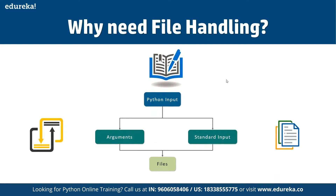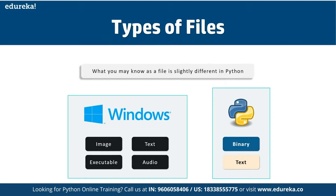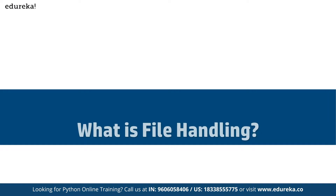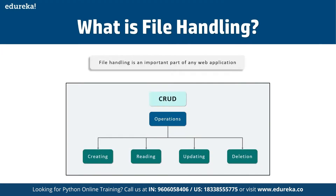There are multiple types of files available. In Windows, we have files in the format of images, text, executables, audio clips, documents, PDFs, and more. In Python, we have either binary or text datasets that we can write. File handling is an important part of any web application — it allows us to not only handle files but also perform CRUD operations: create, read, update, and delete.